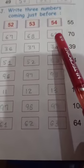55, before 55, 54, 53, 52. 70, 69, 68, 67. Ok.